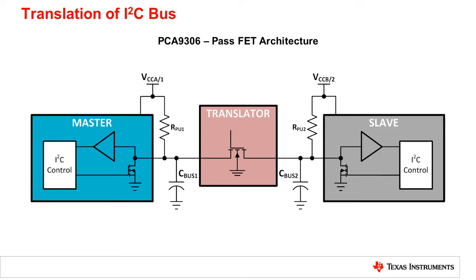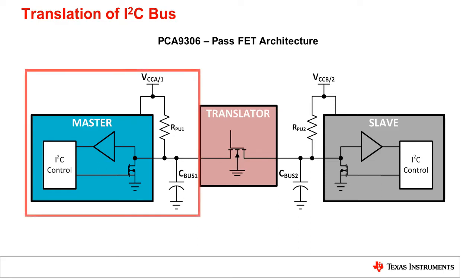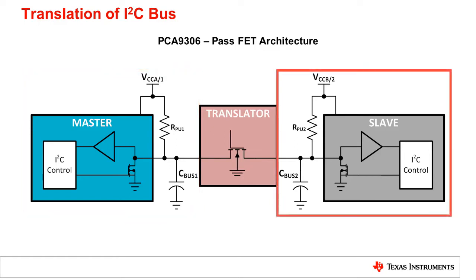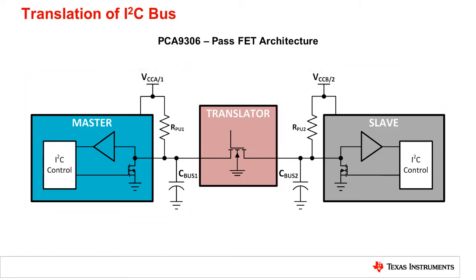In this example, the PCA9306 is used with the master on side 1 and the slave on side 2. Note, it does not have to be that way — I2C is bi-directional, and the master and slave locations can be swapped. Only one of the two lines needed for I2C communications is shown, but the physical implementation is identical, and all observations pertain to both SCL and SDA.